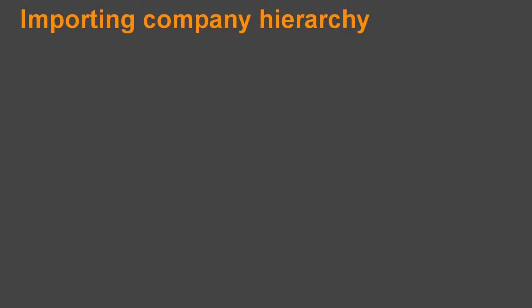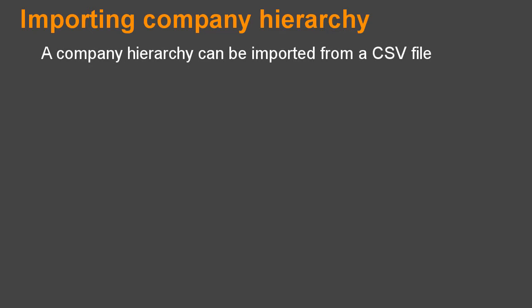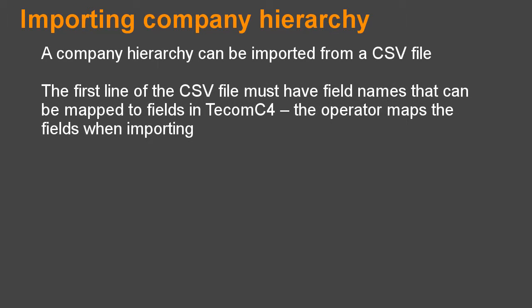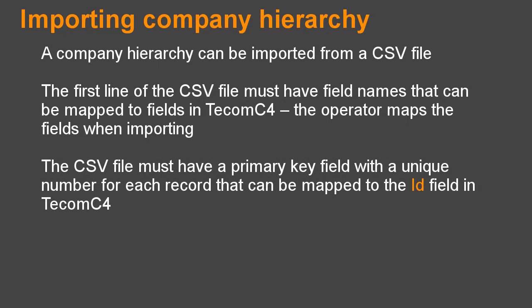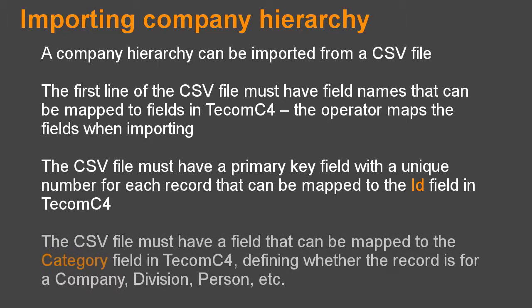Importing Company Hierarchy: A company hierarchy can be imported from a CSV file. The first line of the CSV file must have field names that can be mapped to fields in TCOM C4. The operator maps the fields when importing. The CSV file must have a primary key field with a unique number for each record that can be mapped to the ID field in TCOM C4. The CSV file must also have a field that can be mapped to the category field in TCOM C4, defining whether the record is for a company, division, person, etc.